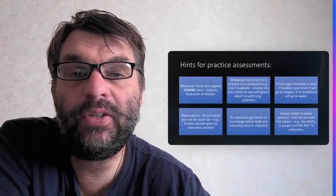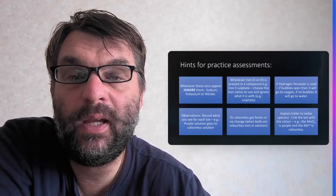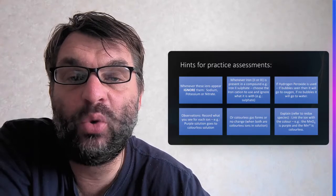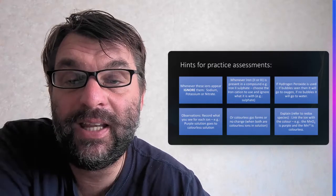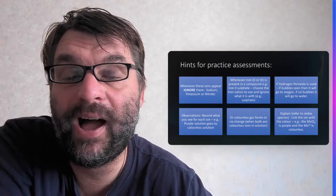Finally, a few more hints for the practice assessment. Whenever these ions appear, ignore them: sodium, potassium, or nitrate, because they're spectator ions which we discussed previously, so you can just remove them from the half equations.